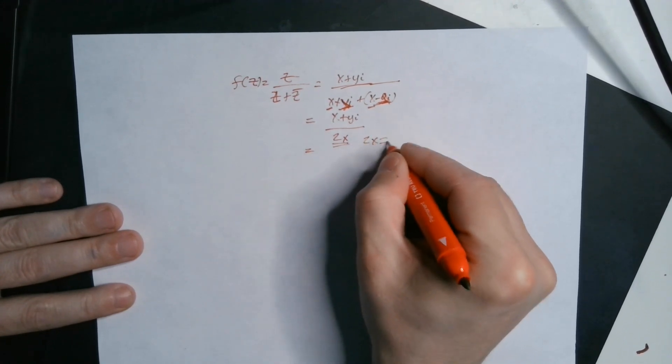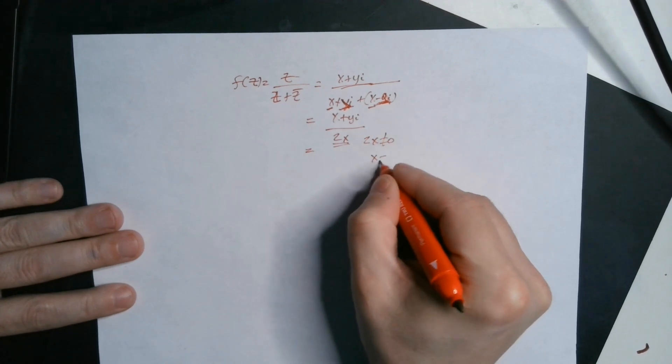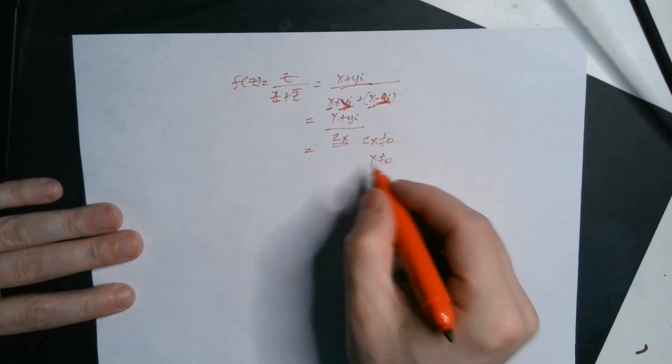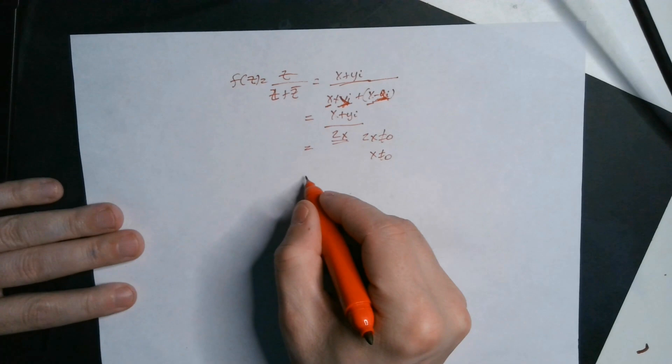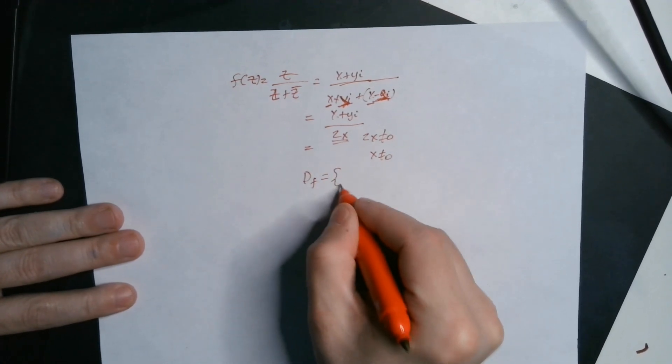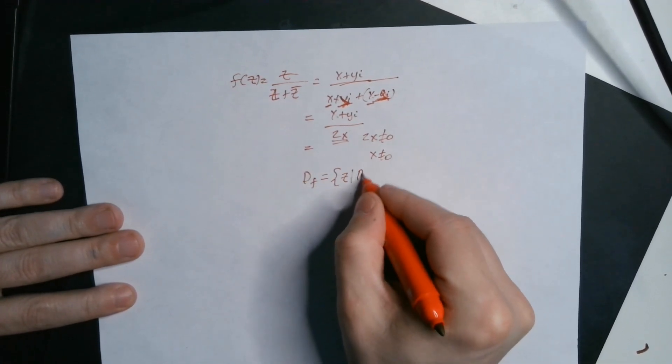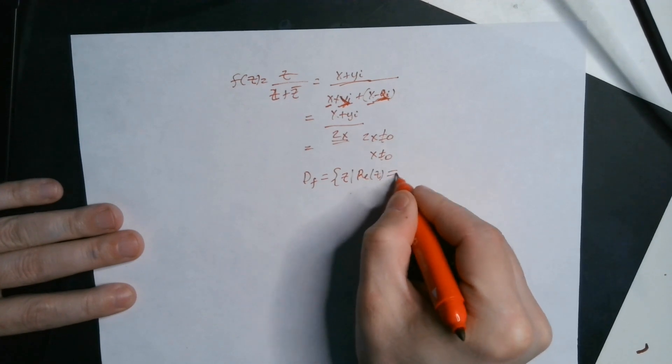So that means, in other words, 2x cannot be equal to zero. That means x cannot be equal to zero. So you can say this in set builder notation. It will say it this way.